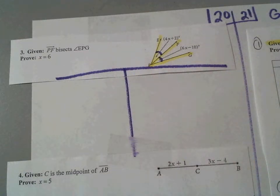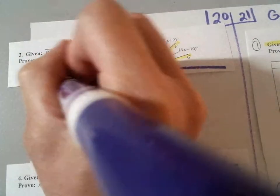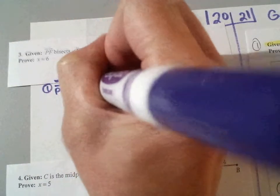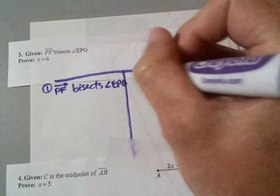And then we are going to fill this in. So step number one, you always write what you are, not always, but usually, write what you are given. So you are given that ray PF bisects angle EPG. And put number one, that's because you are given that.